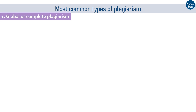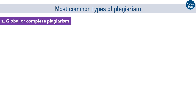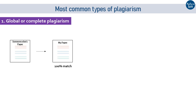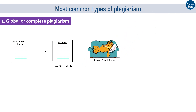The first type is complete or global plagiarism. It is the most offensive type of plagiarism, in which you copy-paste the entire work of someone else without citing them or giving them credit. This is usually done by people who are too lazy to read, write, and work hard, and it shows others' work as their own. This is unethical and a complete no in the scientific community.